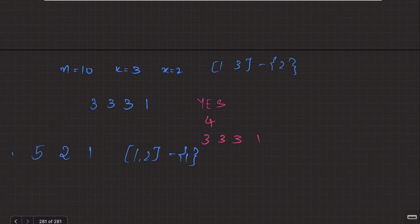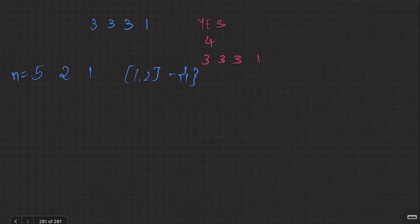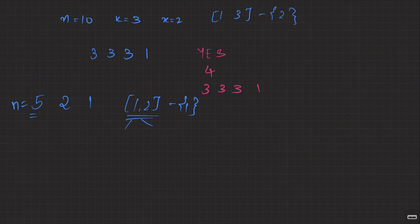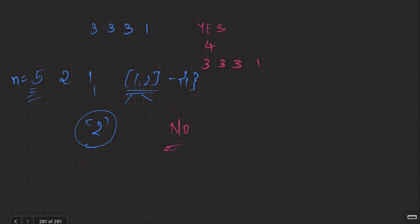The answer would be yes, followed by how many integers you took - four of them - and then 3, 3, 3, 1. Now let's take an example where it is never possible: n=5, k=2, x=1. The range is just {2} since 1 is forbidden. N is odd here, and with only 2 you can never make 5 - with an even number you cannot make an odd number. So the answer is no.